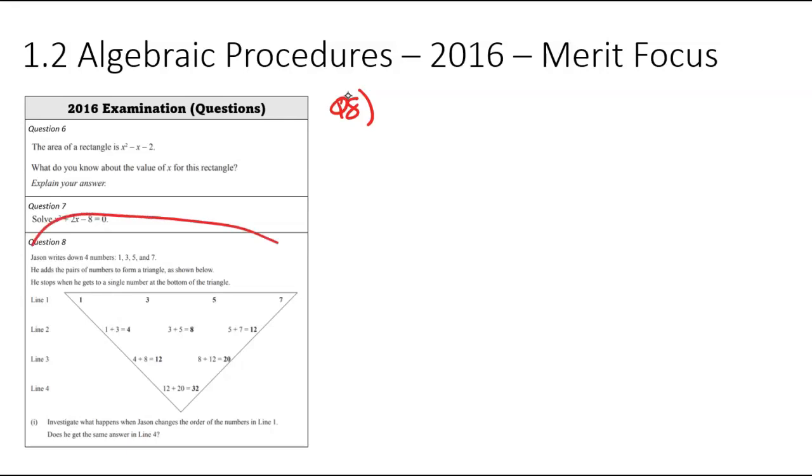To question number eight. And question number eight is a very weird question. It doesn't really involve too much algebra. So Jason has written down four numbers, and we've got one, three, five, and seven. That's the numbers that we're writing down. He adds the pairs of numbers to form a triangle. So we can see that one plus three gets us to four. And he does this for the whole triangle. So there's another triangle that adds up. And there's another triangle down there. And you can see all the numbers go down until there's one answer left.